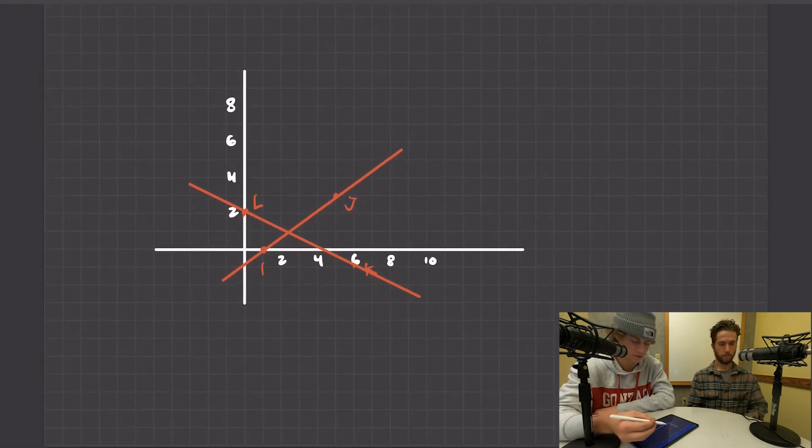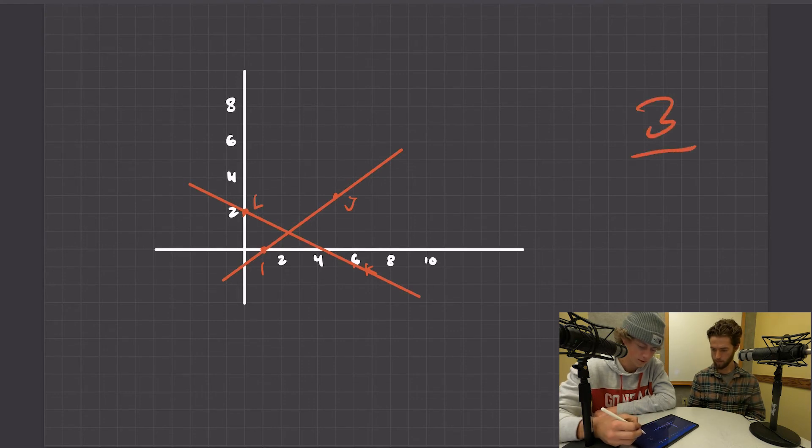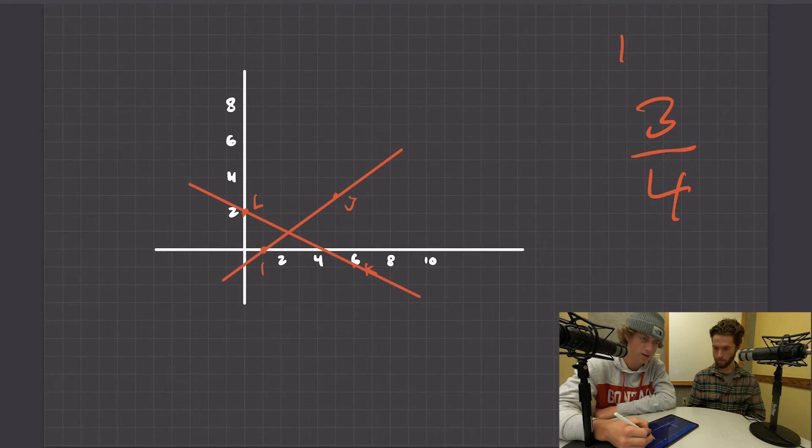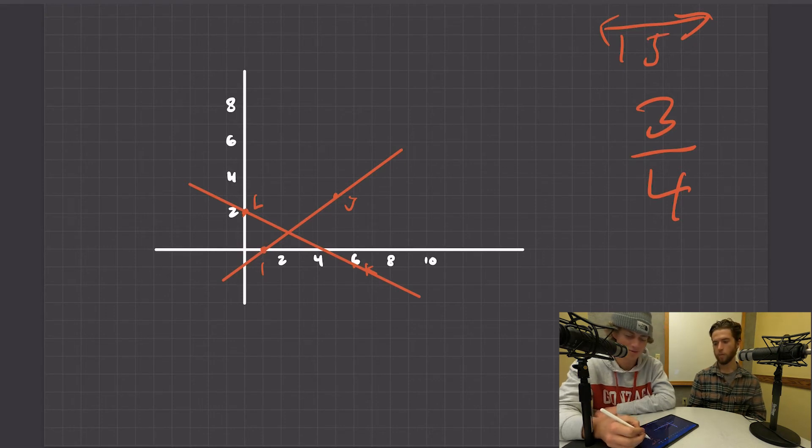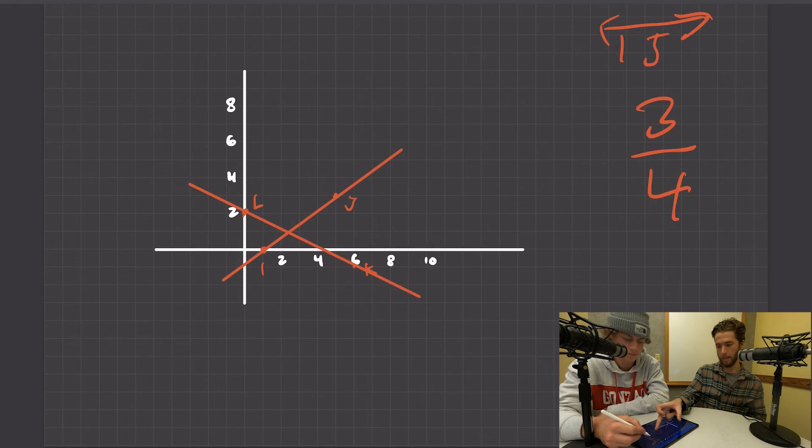All right, so slope for IJ is one, two, three, so there's three. Three over one, two, three, four. Three over four, and that's for IJ. Okay, well, for future reference, generally the letter we use for slope is m.